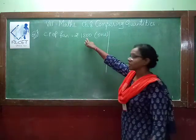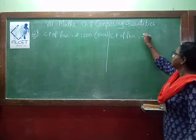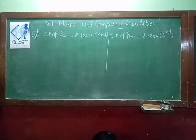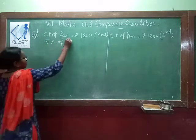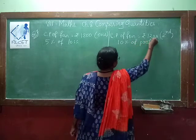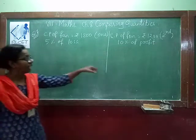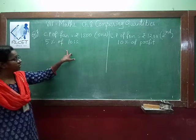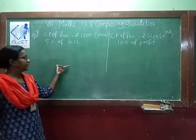For the first fan, cost price is Rs.1200. For the second fan, cost price is also Rs.1200. One is sold at 5% loss and another at 10% profit. We divide the example into two parts — one for the loss and one for the profit. We find the loss percent, convert it to Rs., and subtract from the cost price to get the selling price.